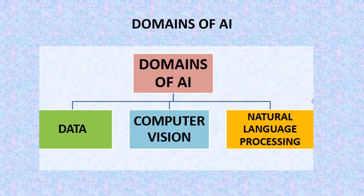Now let's discuss the domains of artificial intelligence. Artificial intelligence has three domains: first, data; second, computer vision or CV; and third is natural language processing, that is NLP.